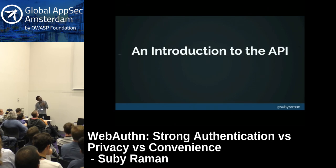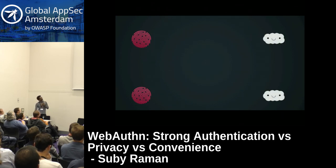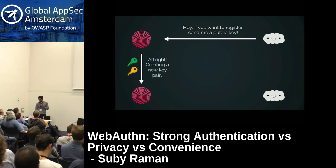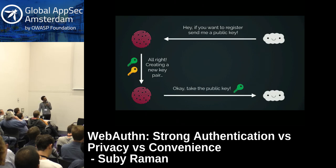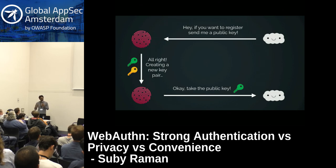Now for an introduction to the API. Registration is where the authenticator creates a key pair and gives the relying party the public key. The server requests the authenticator to create a new key pair, which is then produced by the authenticator, and the public key is sent to the server for storage. The fact that an authenticator built into your device is responsible for generating keys is itself a big step forward — instead of forcing users to create passphrases themselves, the hardware takes care of that responsibility.